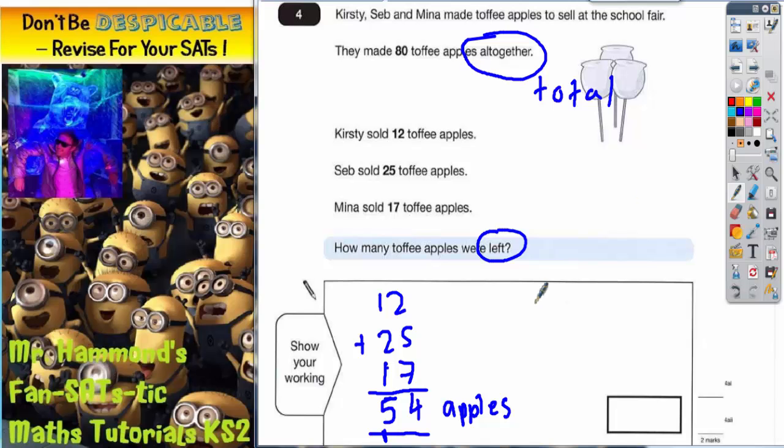If we start with 80 toffee apples, which is what they made, and we take off the 54 that they sold, whatever's left will be how many's left. So, 0 take away 4 we can't do, so we borrow 1 from the next column. That now makes 10. 10 take away 4 is 6, 7 take away 5 is 2.